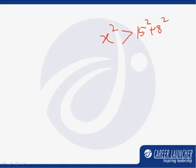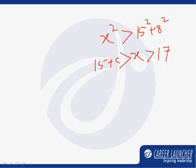But at the same time for the triangle to exist, x has to be less than 15 plus 8. That means x has to lie between 17 and 23.